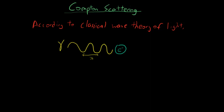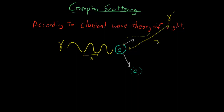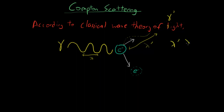According to experiments, what happened was that the electron got scattered and the photon itself got scattered. The electron ended up somewhere off to the side afterwards, and the light afterwards — gamma prime — has wavelength lambda prime. We can see that the wavelength after, lambda prime, is greater than the wavelength before, lambda.